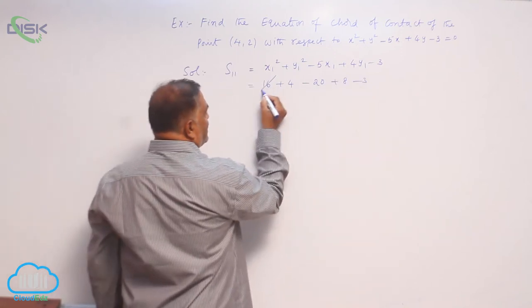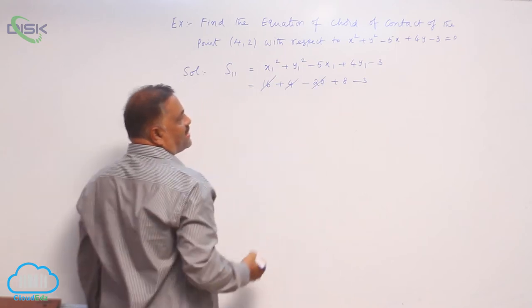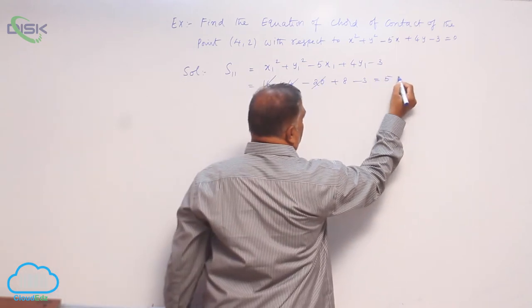Now this is 16, 4, 20 gets cancelled. This is leaving 5, greater than 0.